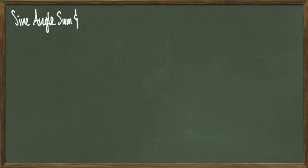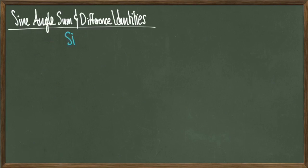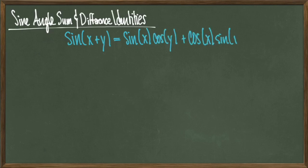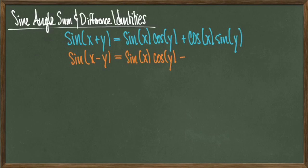Now we're going to introduce some new identities. These first two are called the sine angle sum and difference identities. The first says that sine of x plus y expands into sine of x times cosine of y plus cosine of x times sine of y. The second says that sine of x minus y equals sine of x times cosine of y minus cosine of x times sine of y.